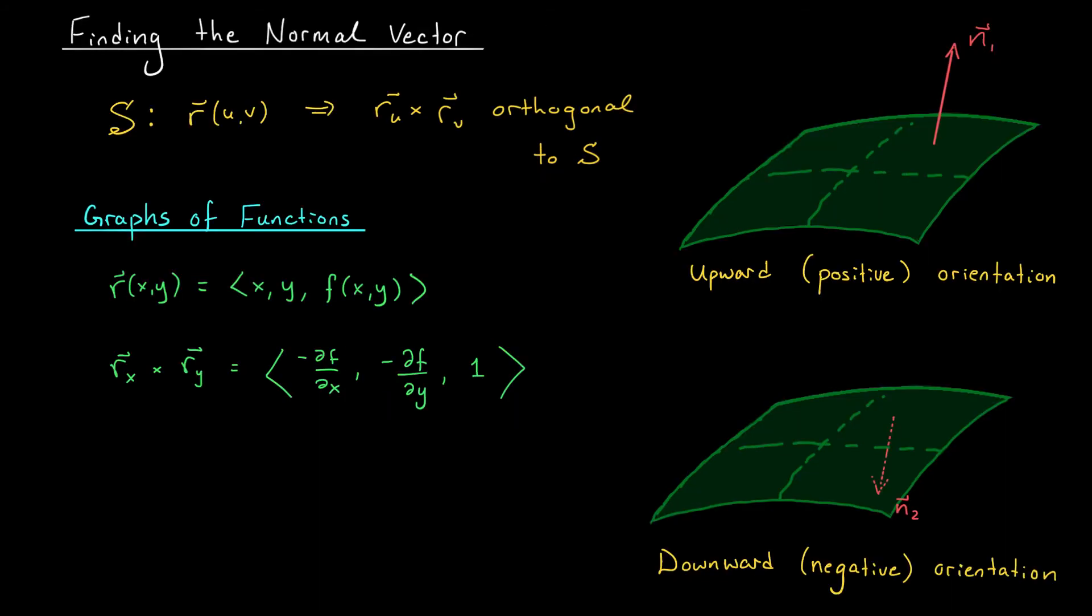To evaluate the surface integral of a vector field, we need to be able to find a unit vector N that points perpendicular to our surface, right? A unit normal vector. Well, if our surface is parametrized by r of UV, then as we've seen, r_u cross r_v will be orthogonal to the surface. We could then unitize this vector to get that unit normal vector N.